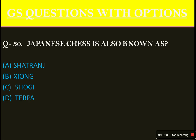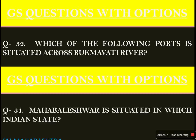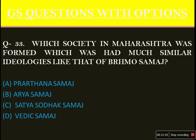Japanese chess is also known as — not Shatranj, not Xiong, not Terpa — the answer is Shogi, option C. Mahabaleshwar is situated in which Indian state? Straightforward question, straightforward answer: option A, Maharashtra. Which among the following ports is situated across the Rukmavati river? The answer is B: it is Mandvi. Which society in Maharashtra was formed with ideologies similar to the Brahmo Samaj? The answer is Prarthana Samaj, option A, founded by Shri Atmaram Pandurang.